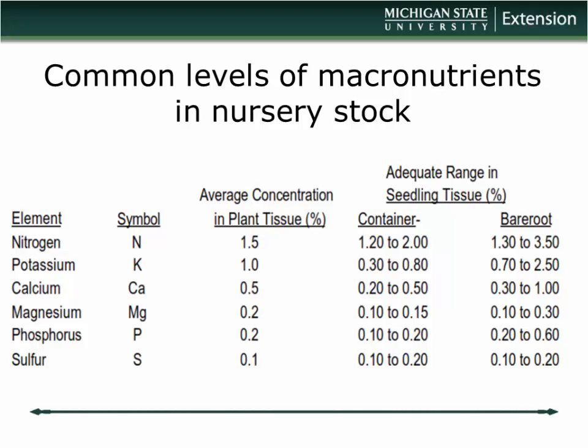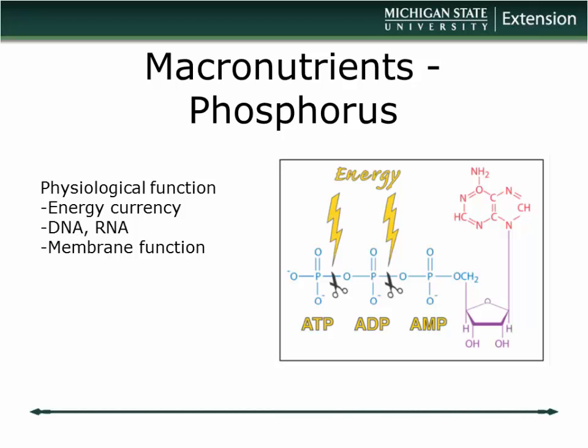That's important when looking at test results. One of the things you want to do for your most important crops is develop a library — a history of what your foliar nutrients look like over time — and recognize that different plants will have different nutrient concentration profiles.